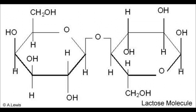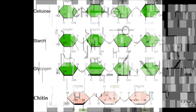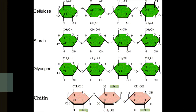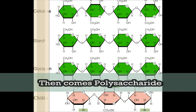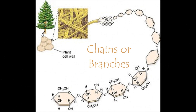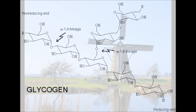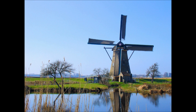My next youngest sister is the oligosaccharide. She keeps her figure by containing two or three simple sugars. Then comes polysaccharide — I have lots of sugar. I can be chains and branches, found in both animals and plants, like cellulose in plants and glycogen in animals.